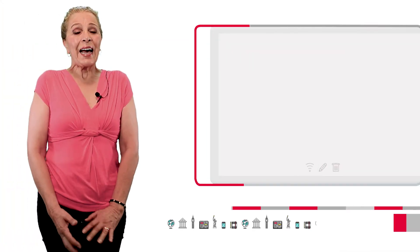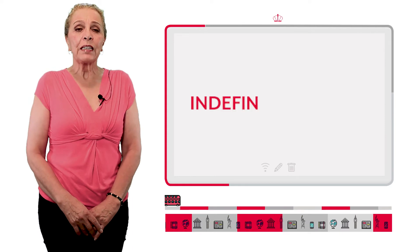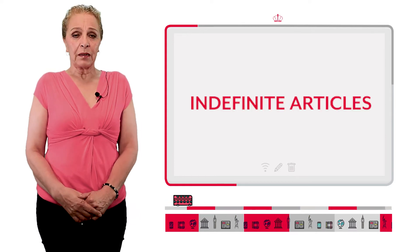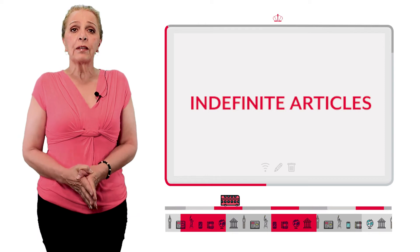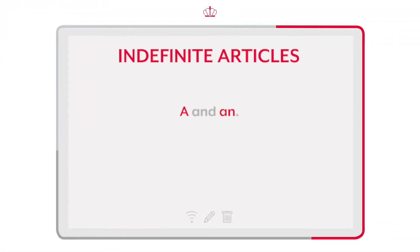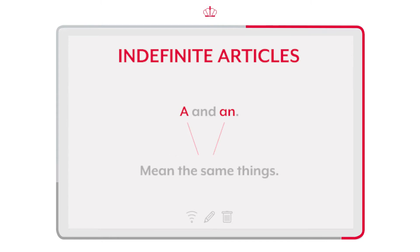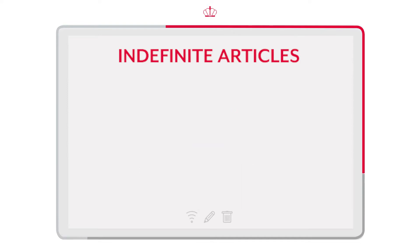With that in mind, we can talk about indefinite articles. Con eso en mente, podemos hablar de los artículos indeterminados. We have 'a' and 'an'. Both mean the same thing, but we need to know the rule to use them. Ambos significan lo mismo, pero debemos saber la regla para usarlos.